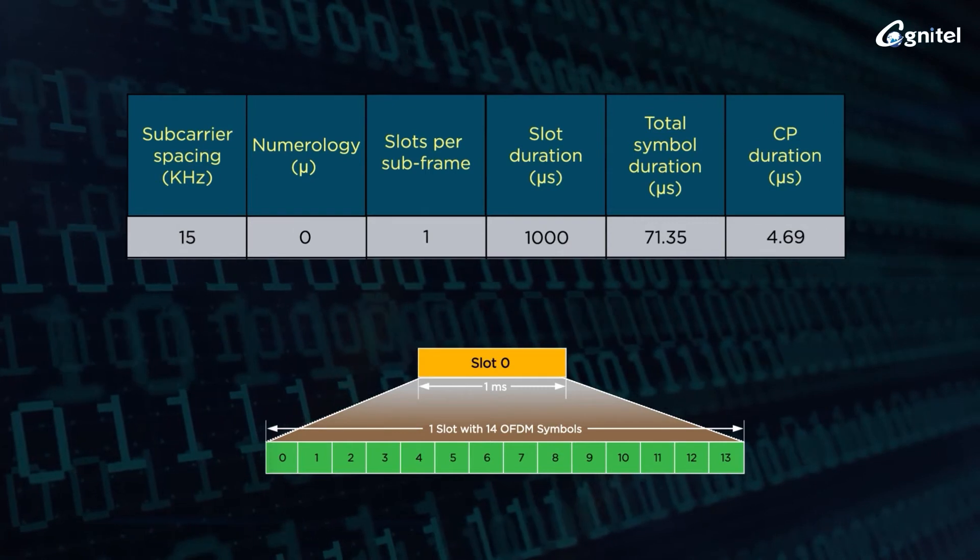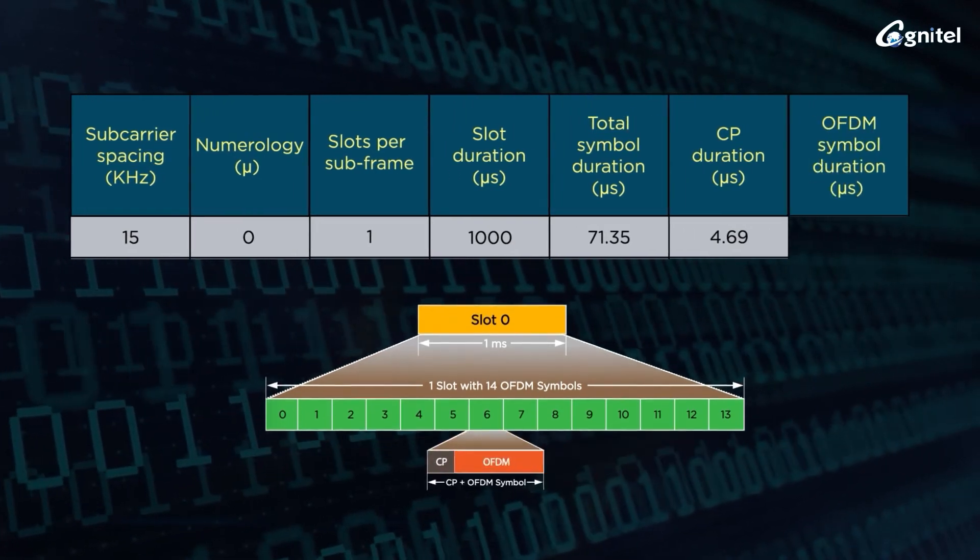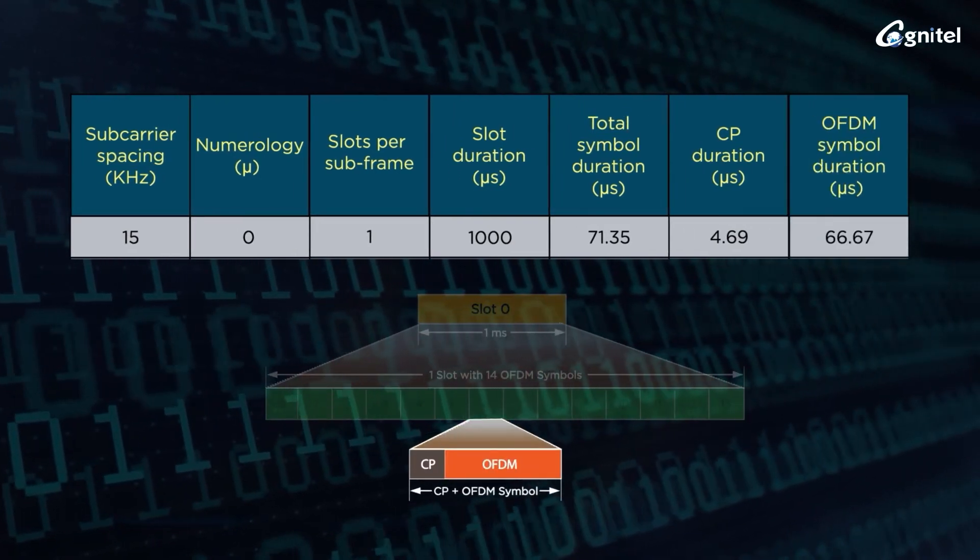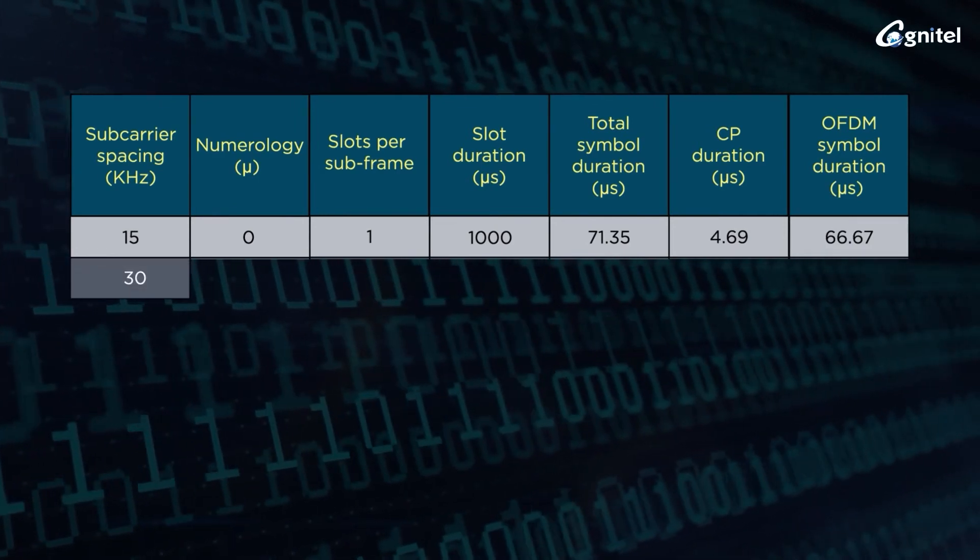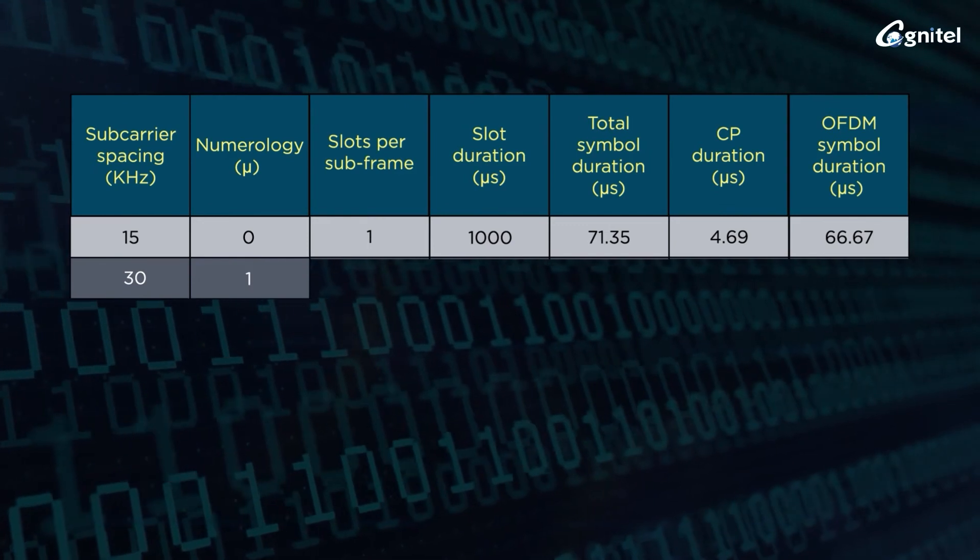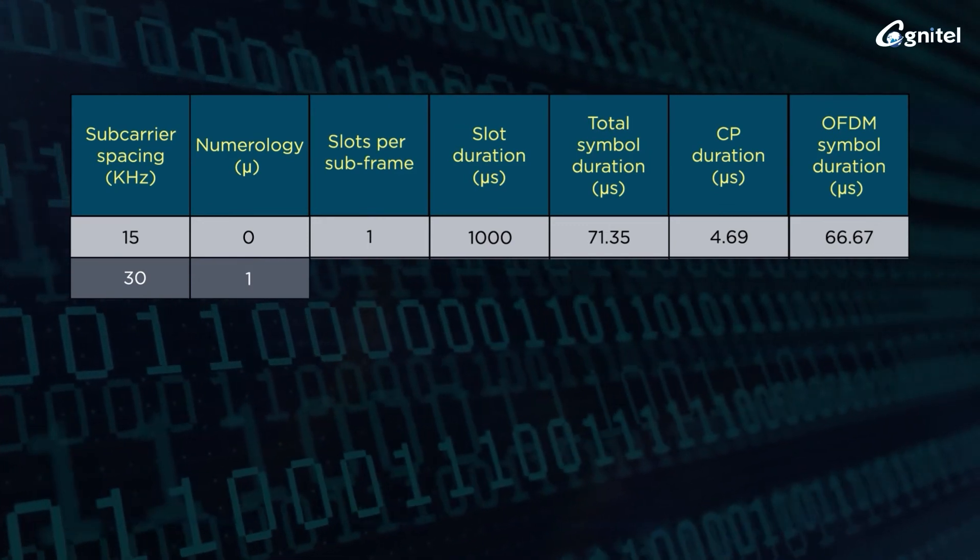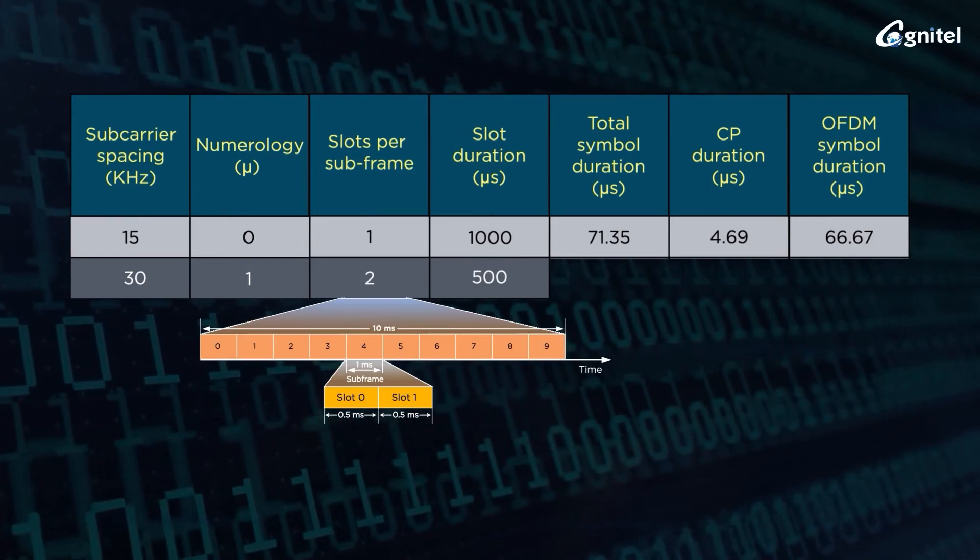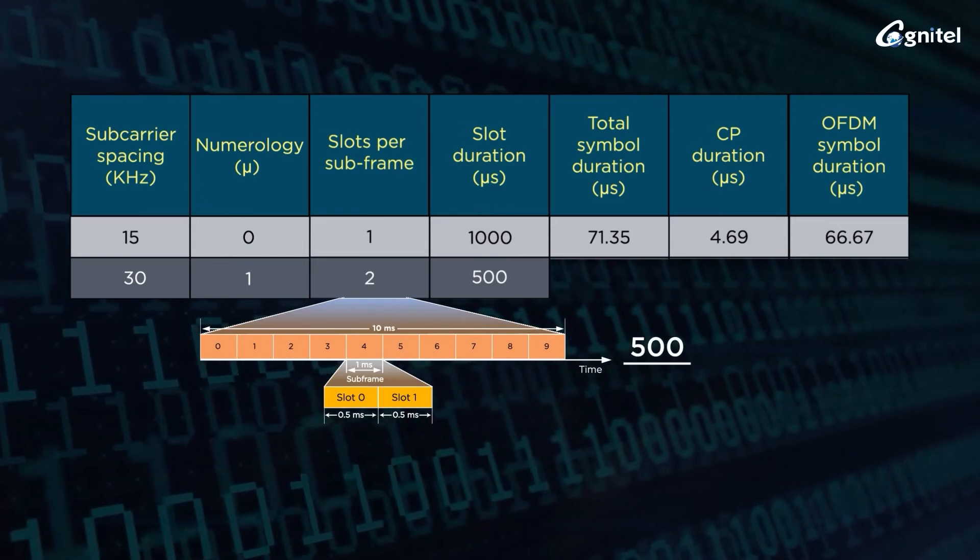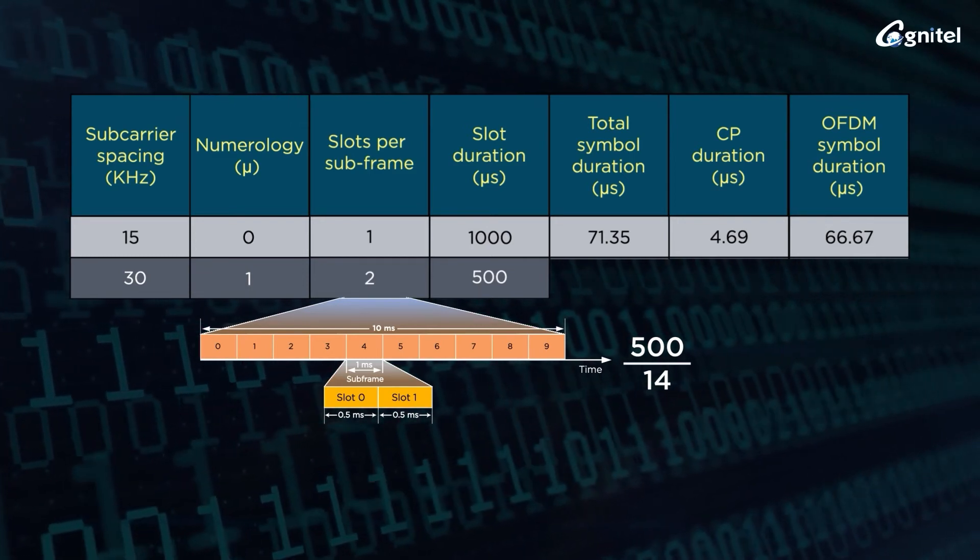For 30 kilohertz subcarrier spacing, the number of slots in a subframe are 2 with duration of 500 microseconds each. Now 500 divided by 14 OFDM symbols results in total duration of 35.68 microseconds.